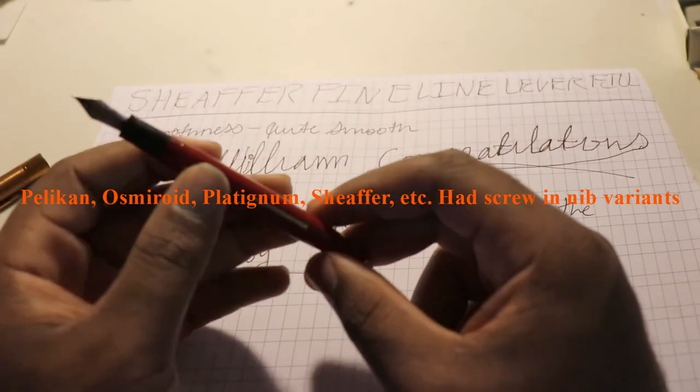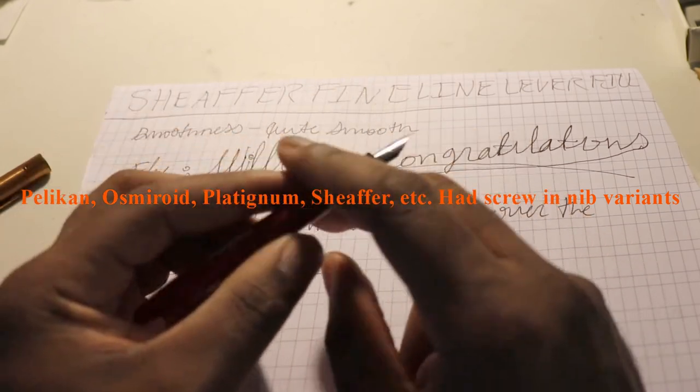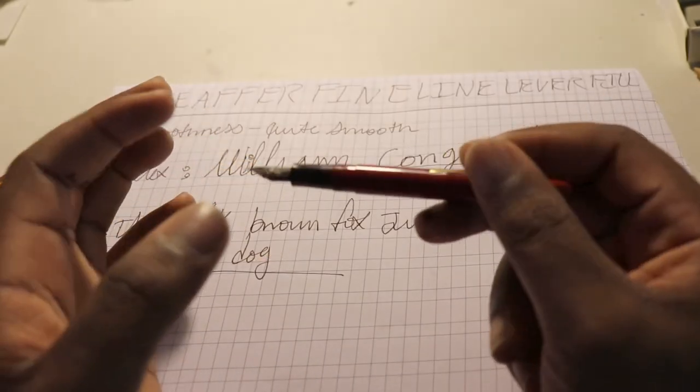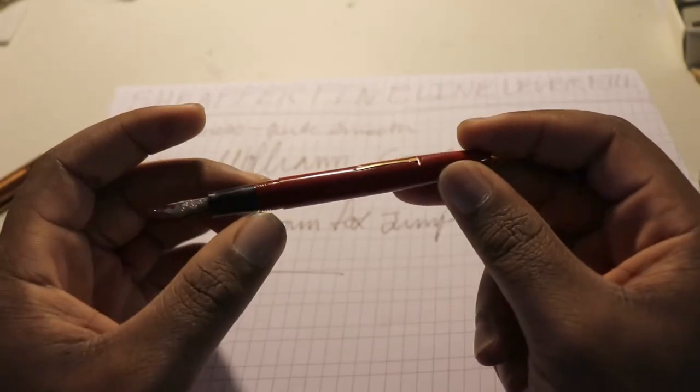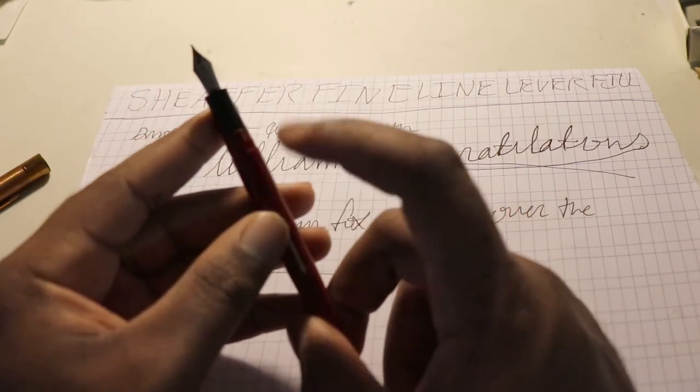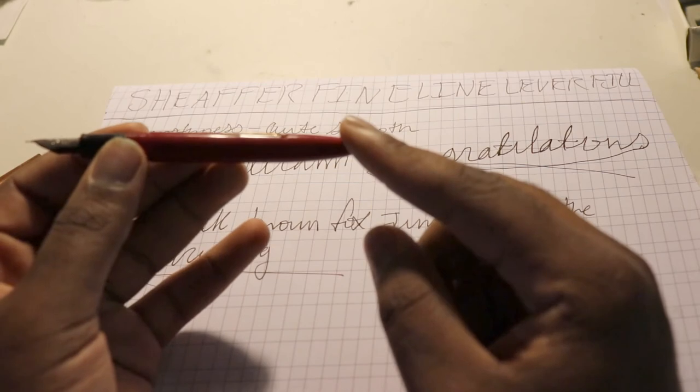If you're going to get a Fine Line, just make sure it's in working condition, or you know how to fix it. Like for me, I knew how to fix it. It took me about a day or so to soften everything up. I got an ultrasonic cleaner, cleaned out the whole pen, I slapped a new ink sack on it.